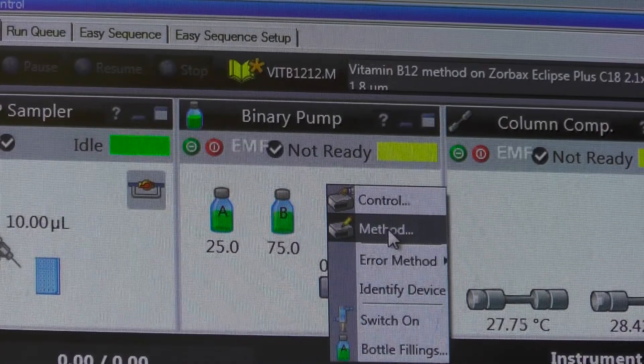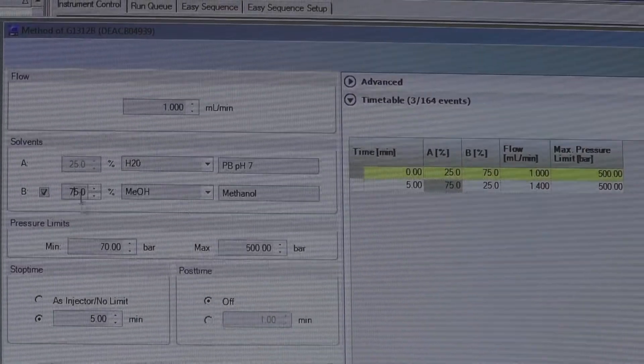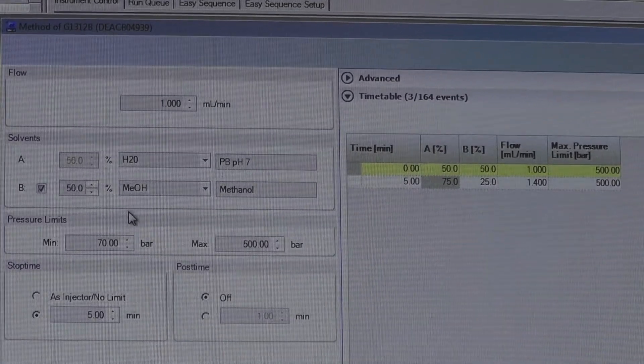Right-click on the binary pump icon and set the solvent gradient to 50% A and 50% B for degassing and click OK.